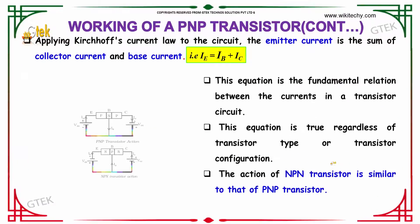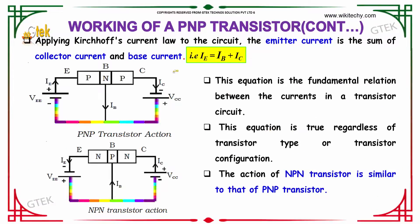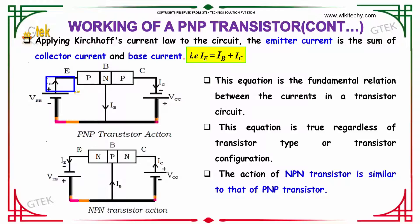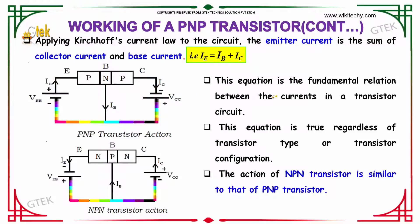As per Kirchhoff's current law applied to this circuit, the emitter current is the sum of the collector current and the base current: IE = IB + IC. This equation is the fundamental relationship between the currents in a transistor circuit.